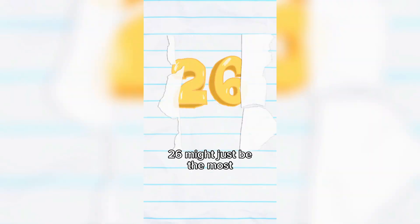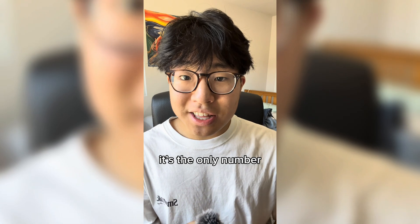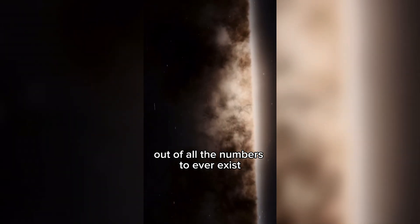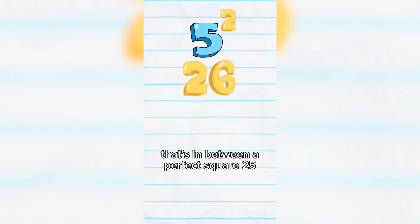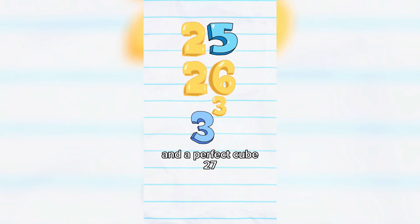And finally, 26 might just be the most discrete number. It's the only number out of all the numbers to ever exist in our universe that's in between a perfect square, 25, and a perfect cube, 27.